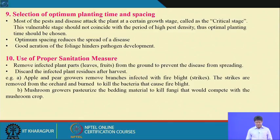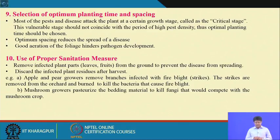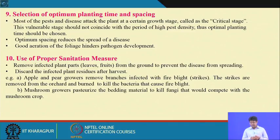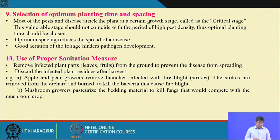Number 9 is use of proper sanitation measures. Remove infected plant parts — leaves and fruits — immediately to prevent spread from one plant or field to another. Discard infected plant residues after harvest. For example, apple and pear branches infected with fireblight are removed and burnt to kill the bacteria. Mushroom growers pasteurize bedding materials to kill fungi competing with the mushroom crop.